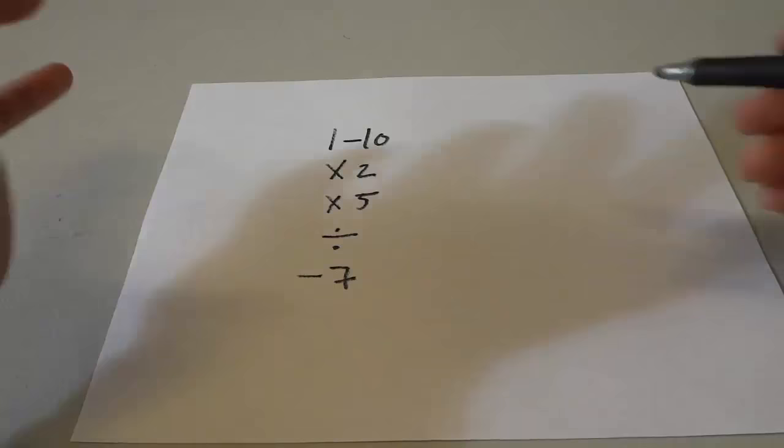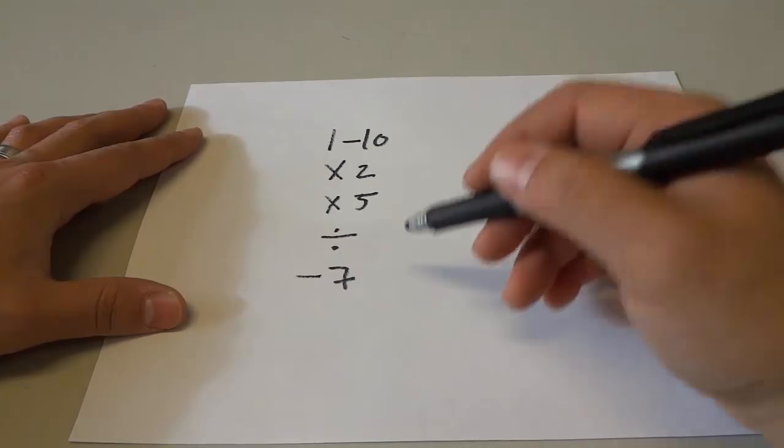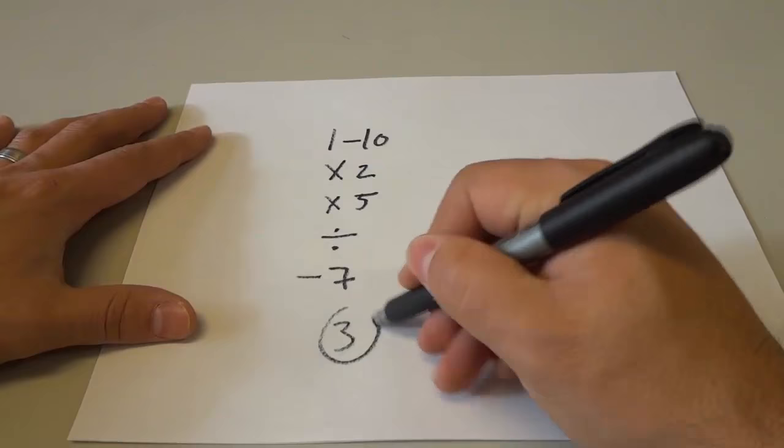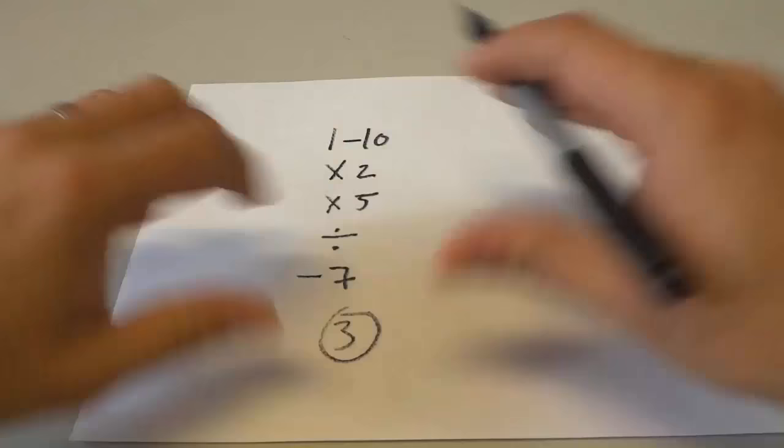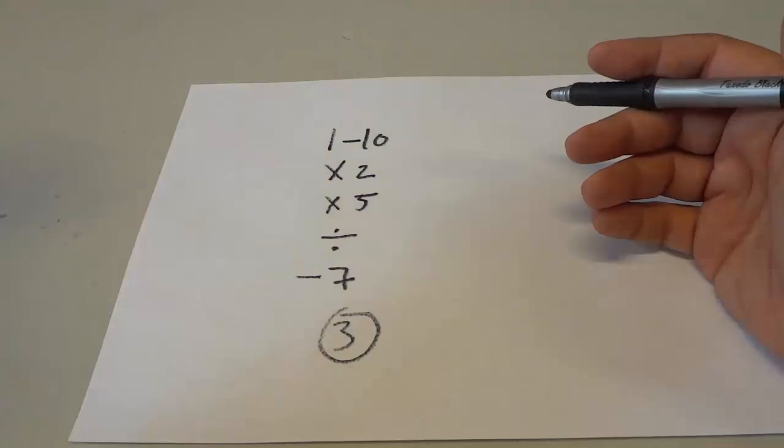Now, when they have finished this, you're going to tell them that you're going to guess the answer. And you're going to guess the number 3. If they did this correctly, then they will always end up at 3. So all that you have to do is say, I'm going to guess the number that you're at, do some hand motions to make it convincing, and then guess the number 3.